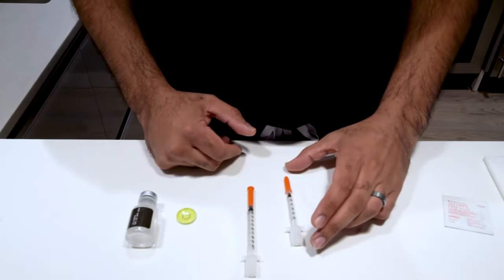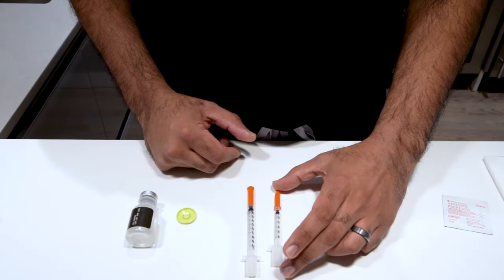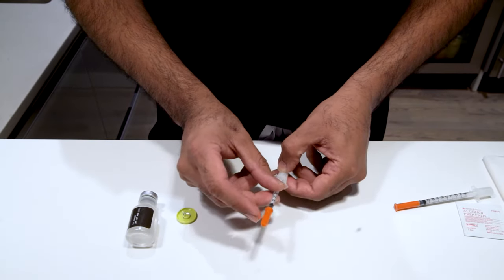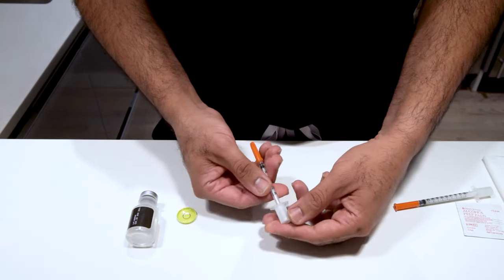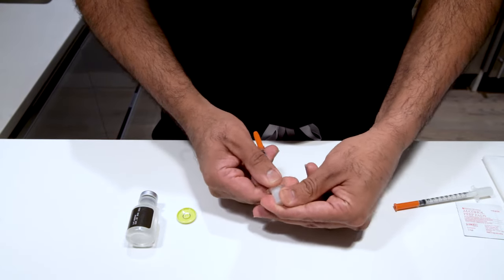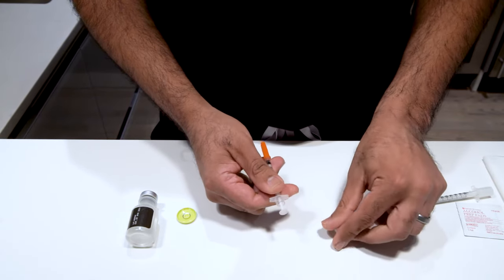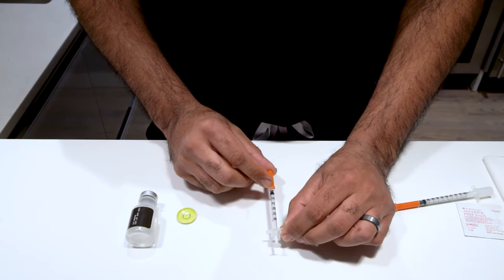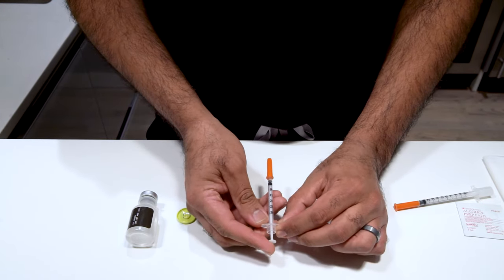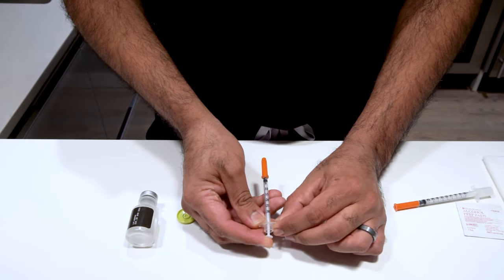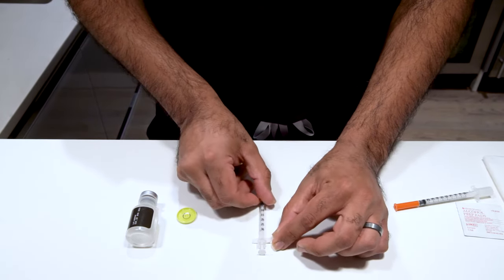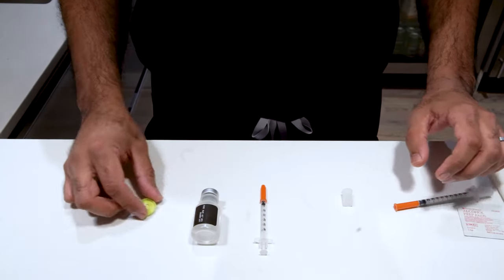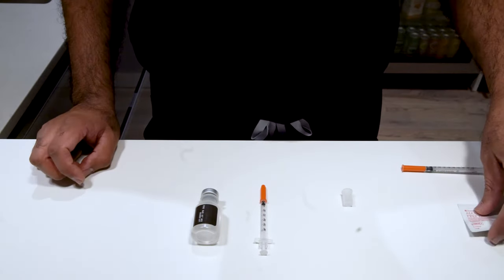Every syringe has a cap on the top protecting the needle, and sometimes it has a cap actually protecting the plunger. Simply twist the cap off the plunger if it exists. Take a look at the plunger and make sure that it's all the way up to the zero mark. If it's not, go ahead and push that plunger all the way to the top before getting started. We're going to be using our 30 unit syringe today with our medication to do our injections.